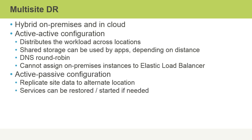In an active-passive configuration, we would replicate site data to an alternate location. Then, at that alternate location, if required, services can quickly be restored or started in case our primary site fails, but they're both not actively processing requests at the same time, as is the case with an active-active configuration.